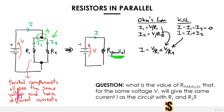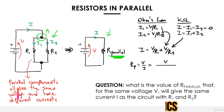We're very close to the end. R_parallel is defined as v divided by i. From the circuit, the voltage v is the same as the input, so we replace i with the new definition we found: v divided by r1 plus v divided by r2. Since v appears in both numerator and denominator, it simplifies, giving us the final equation for the equivalent parallel resistor.